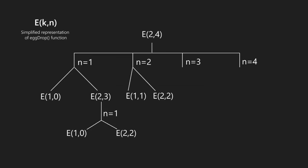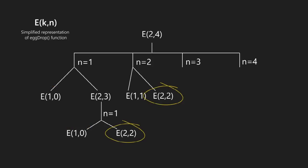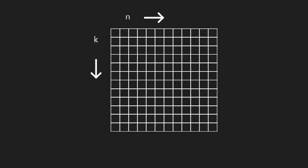If we observe closely, there are repeated function calls, causing the same subproblems to be solved again and again, which is inefficient. To overcome this, we save the solution of smaller problems in a 2D array. It's 2D because we have two parameters. Corresponding to those parameters, solutions are saved at their locations in the 2D array where rows represent number of eggs and columns represent number of floors.